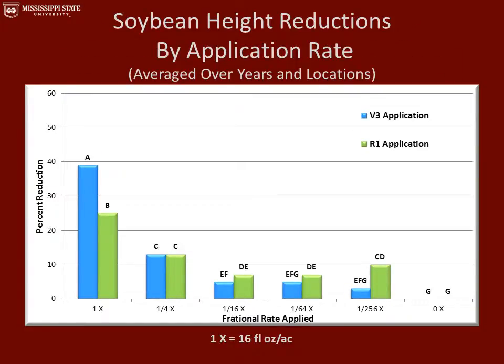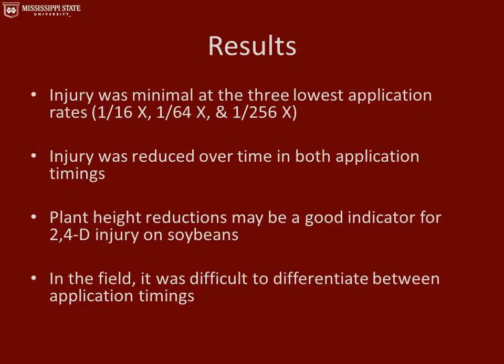This graph represents the soybean height reductions by application rate, averaged over all years and locations. With the 1x rate, treatments that received the application at the R1 growth stage had a 22% height reduction, and those that received it at the V3 growth stage had nearly a 40% height reduction. With the lowest rate, we had anywhere from a 3% to 10% height reduction. Injury was minimal at the three lowest application rates and was reduced over time in both application timings. Plant height reductions may be a good indicator for 2,4-D injury on soybeans.